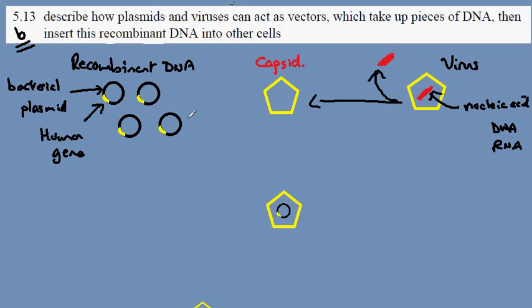The plasmids are taken up by the virus to form the structure here, and the virus is going to act as a vector of our recombinant DNA. It's going to help us transfer that DNA into our host cell.